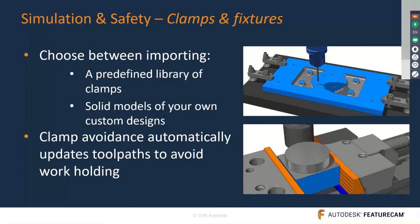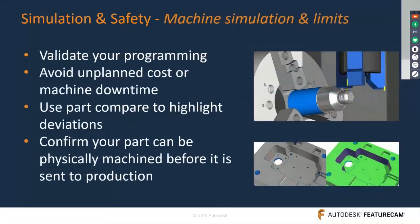Inside FeatureCAM, many add-ins are available for clamps and fixtures — you can add vises and clamps to make your simulation more realistic before going to the machine. Machine simulation is also available, which is critical for multitasking machines where you can avoid holder collisions and virtually machine the part before sending it to production.